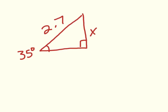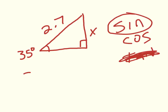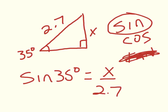Here is exactly what a problem will look like. I have a right triangle with a 35-degree angle and a hypotenuse of 2.7, and I want to find X. Which ratio do we use — sine, cosine, or tangent? Since we know the hypotenuse, get rid of tangent because it doesn't use the hypotenuse. Standing at 35 degrees, X is the opposite side, so we use sine. Sine of 35 degrees equals X over 2.7. That's how you set it up. The next video will show you how to solve it.